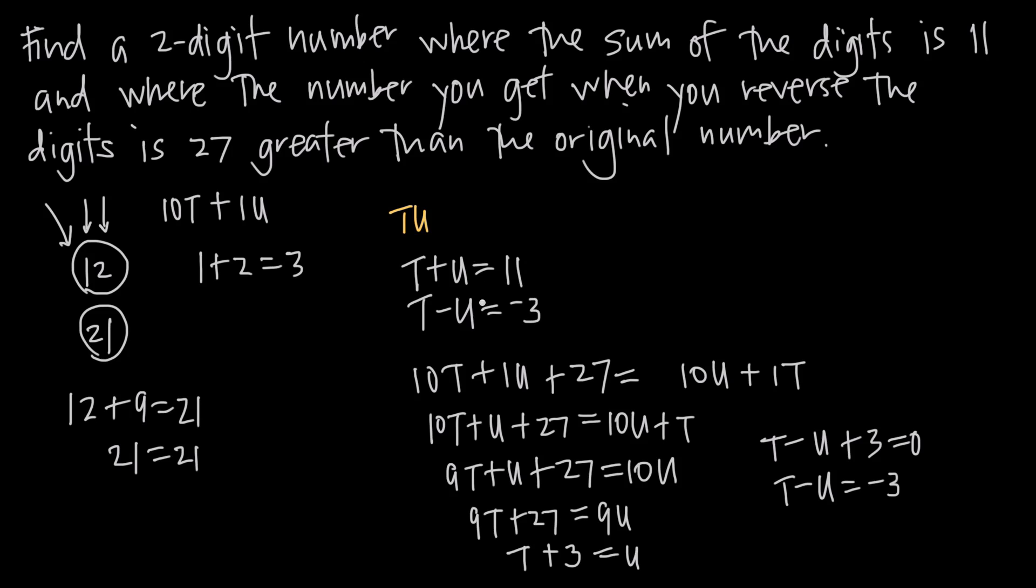What we can do is add these two equations together because when we do that, we'll have a positive u plus a negative u which is going to be 0. Those two will cancel and we'll be left with t only.